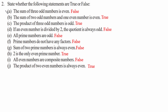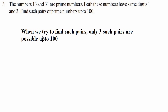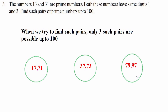Question three: the numbers 13 and 31 are prime numbers with the same digits 1 and 3. Find such pairs of prime numbers up to 100. Only three such pairs are possible up to 100: the first pair is 17 and 71, the second is 37 and 73, and the last pair is 79 and 97.